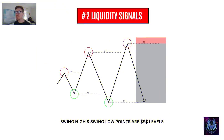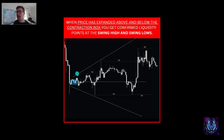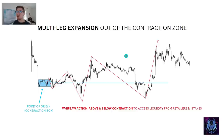Number two: liquidity signals. These are the swing high and swing low points within market framework — these are the money levels. Every swing high and swing low we get outside the contraction box creates a confirmed liquidity line. We draw these lines and they become entry points and exit points for our trades. They are extremely accurate barometers for understanding market structure. When price expands above and below the contraction box you get confirmed liquidity. We mark these liquidity lines at the swing highs and swing lows. We call these multi-leg expansions out of the contraction zone.